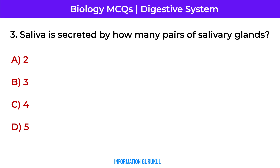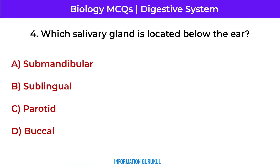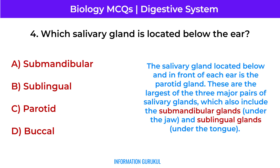Saliva is secreted by how many pairs of salivary glands? Three. Which salivary gland is located below the ear? The salivary gland located below and in front of each ear is the parotid gland. These are the largest of the three major pairs of salivary glands, which also include the submandibular glands under the jaw and sublingual glands under the tongue.